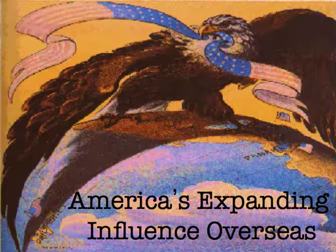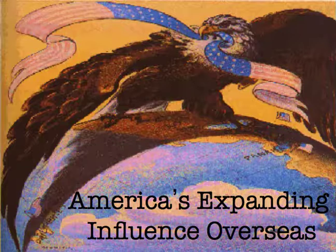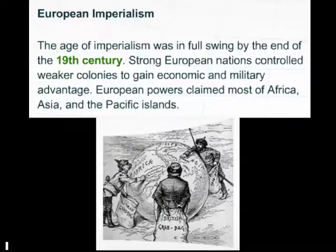Now Unit 6 has two parts. The first part, beginning right now, talks about how the United States started to expand its influence overseas. In the second part we'll look at the role the United States played in World War I. In both parts we'll see that around the turn of the 20th century, the US starts to become a leader in world affairs — a radical change from the isolationist nation it had been for its first 100 years, following George Washington's advice not to get involved in world affairs, especially European affairs. You should be on your Unit 6 introduction to American imperialism note sheet, and please pause the video if you need more time to write.